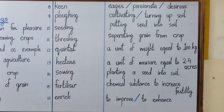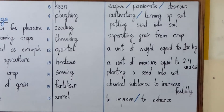Number ten is 'seeding', which means putting seed into soil. Number eleven is 'threshing', which means separating grain from crop.